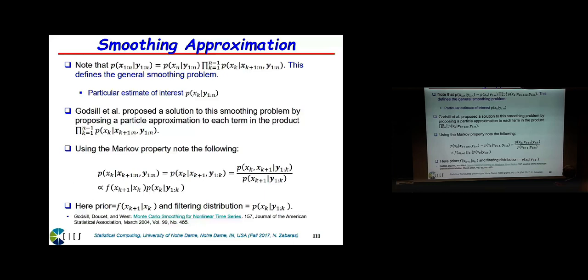Lots of the particles have collapsed to one particle by the end. The Monte Carlo approximation for X_j where j is significantly less than n is not very good. One thing you can do to improve the approximation of X_k given all the data is to compute the smoothing distribution: the probability of X_k given Y_{1:n}. You can appreciate why this is called a smoothing distribution — we use even future data beyond time k.